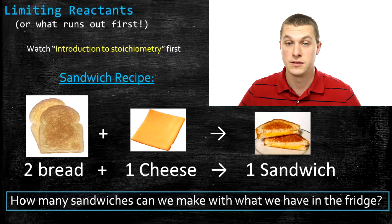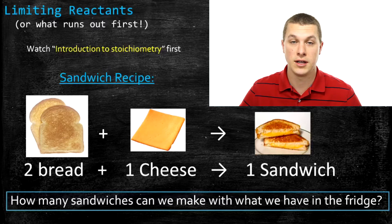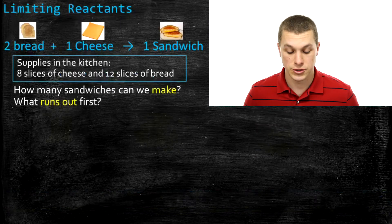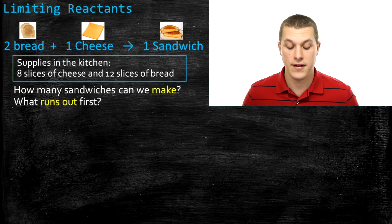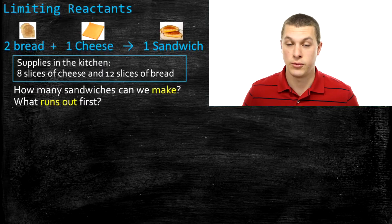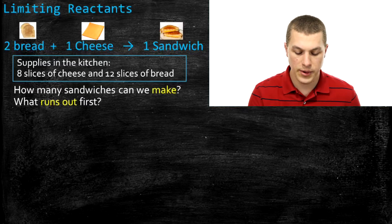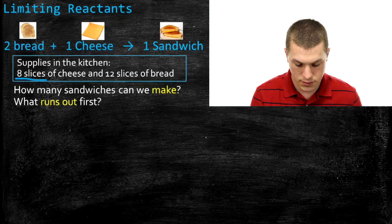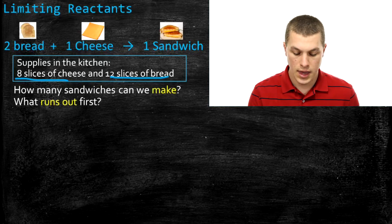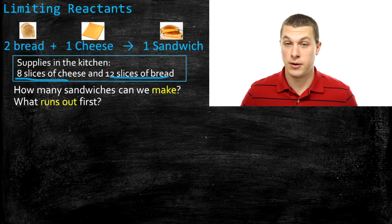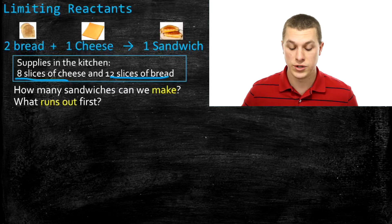In this video, we'll first look at sandwiches and think about how many we can make with a given amount of ingredients, then apply the same process to chemical reactions. Let's say I go into the kitchen and I have 8 slices of cheese and 12 slices of bread. The questions we want to answer — the same ones we'll ask for chemical reactions — are: how many sandwiches can we make, and which ingredient runs out first?